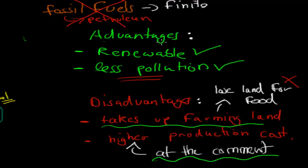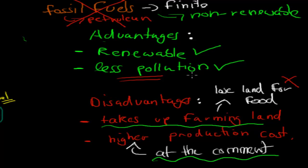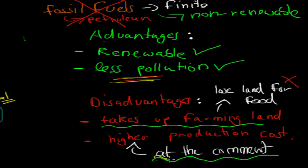To summarize: the advantages of cellulose as a raw material are that it's renewable — we can grow more and more — whereas fossil fuel petrochemicals are non-renewable. The other advantage is that it produces less pollution compared to fossil fuels. The disadvantages are that it takes up farming land, reducing land available for food production, and it currently has higher production costs, though that may change in the future.